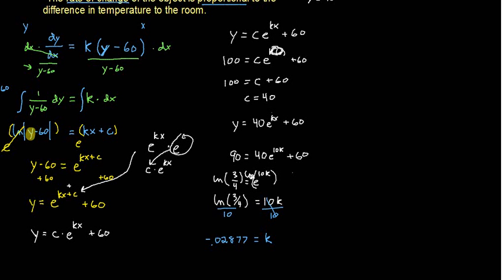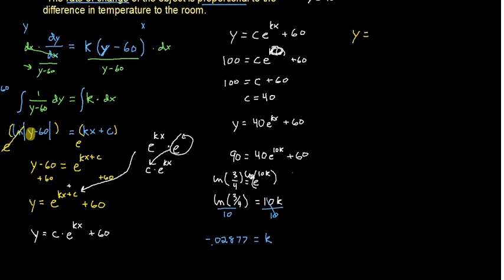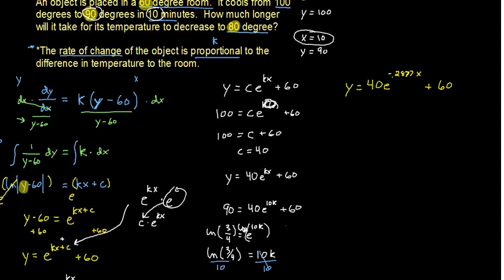I'll write it back up at the top one more time. So now we have y equals, we know c is 40, e to the k, which is negative 0.2877x plus 60. Alright. And if we want to know, let's see, our last thing that we wanted to know was how long does it take to get down to 80 degrees? Well, that's a y value. We need to figure out the x value.